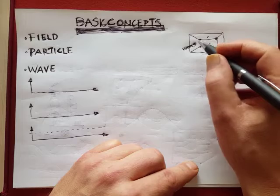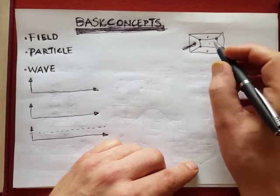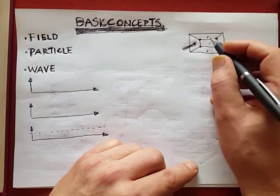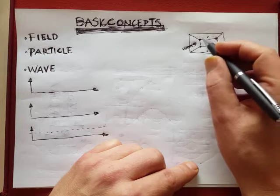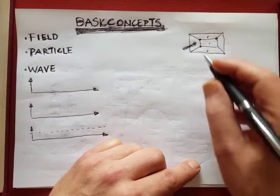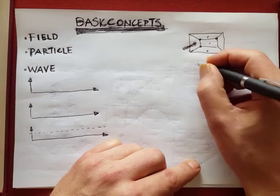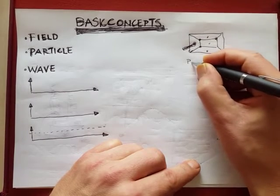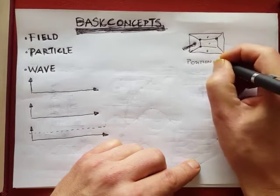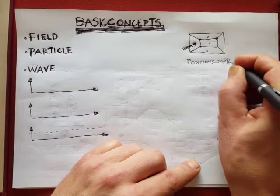Every point in this room has a temperature and there is no point in the room where there is no temperature. Because there is a temperature everywhere. So with a field we have a space and in that space we have positions and to each position we associate a value.